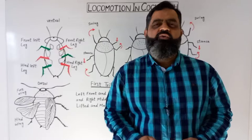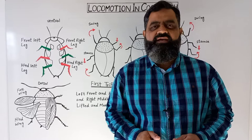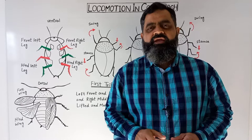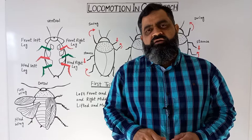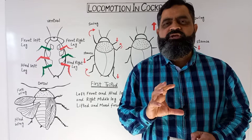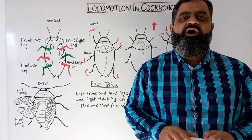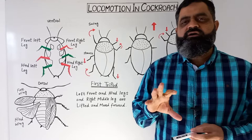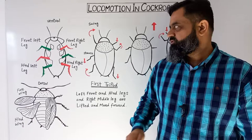Hello students. In this video lecture, we are going to discuss locomotion in cockroach. Cockroach is an insect which belongs to phylum Arthropoda and kingdom Animalia. It has a very peculiar means of locomotion — it can fly, run, walk, and also climb on any surface. We are going to discuss how locomotion takes place in cockroach and first look at the structure of body parts or appendages.